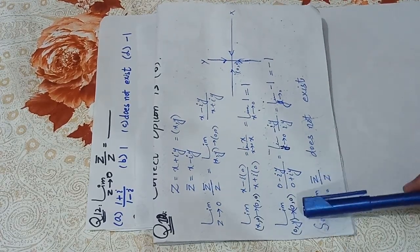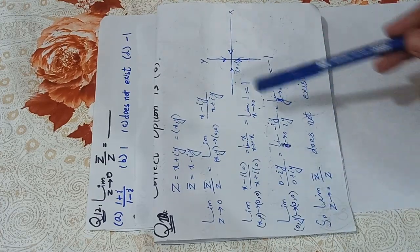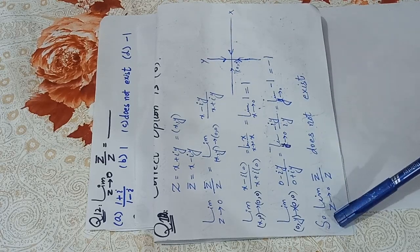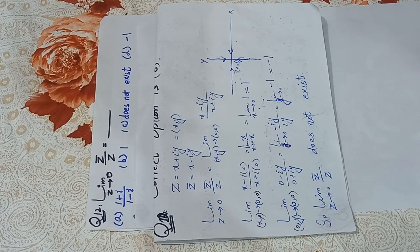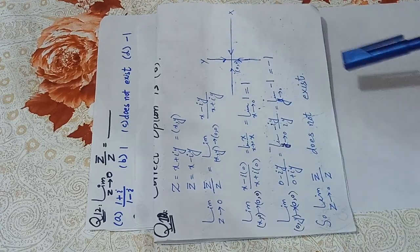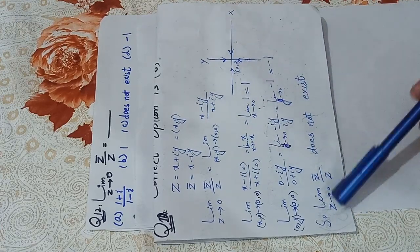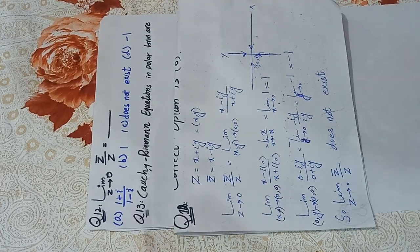Now if you check both limits: the first gives 1 and the second gives −1 — they are not the same. Just as a limit exists only when the left-hand limit equals the right-hand limit, here approaching along x gives 1 and along y gives −1. Since the results differ, the limit of z̄/z as z → 0 does not exist. The correct option is C.